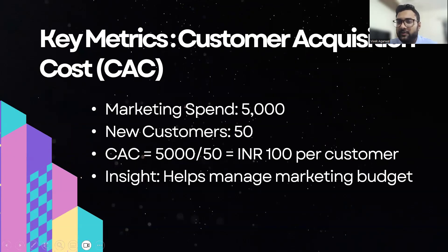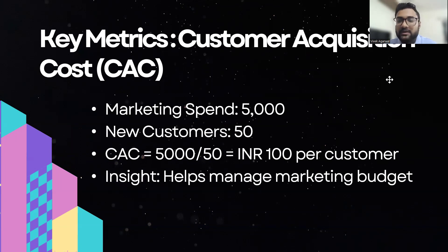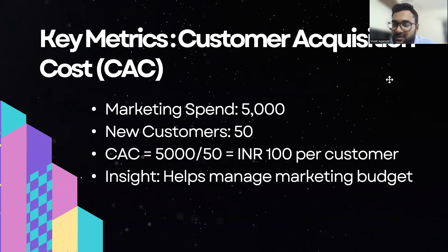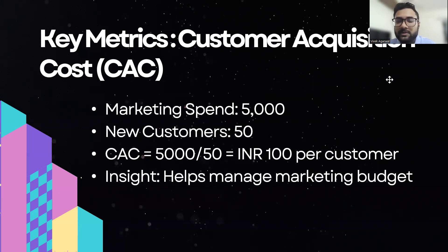The third and very important metric is customer acquisition cost — how much money the company is spending to gain new customers who come to the landing page and ultimately take the product. For example, if I am spending 5,000 rupees and I'm getting 50 new customers, my customer acquisition cost is 100 rupees per customer. This helps find out how much you are spending to onboard a customer and helps in managing the marketing budget so that acquisition cost does not exceed the budget.